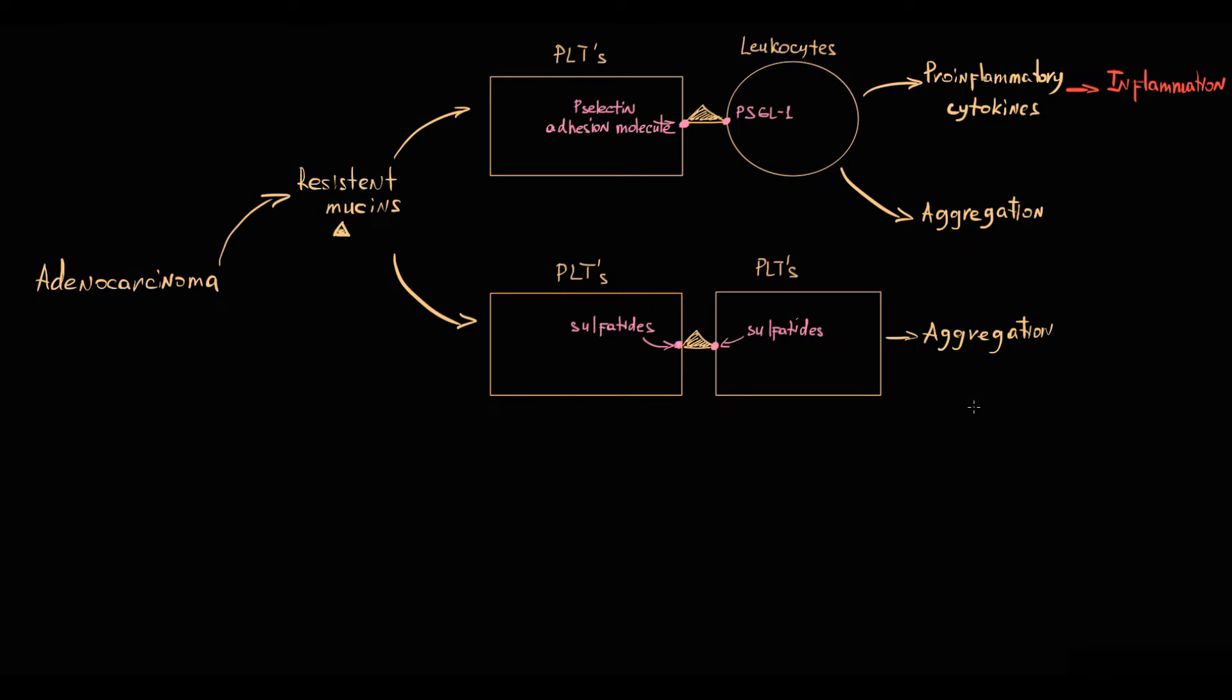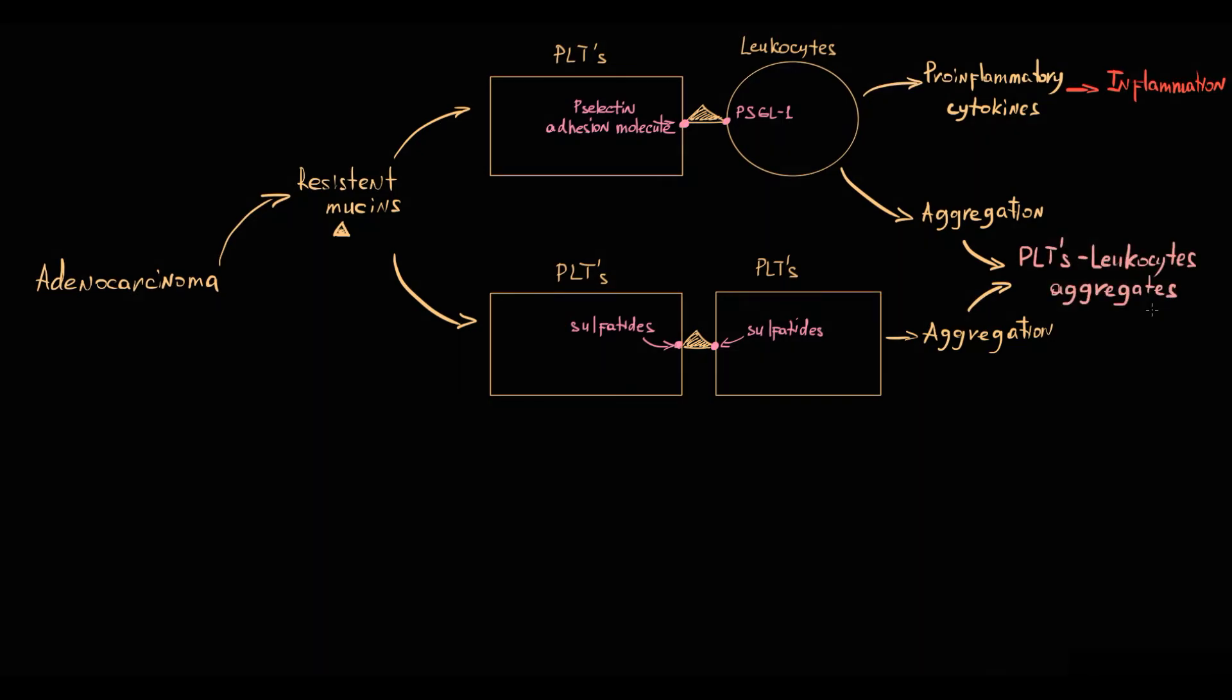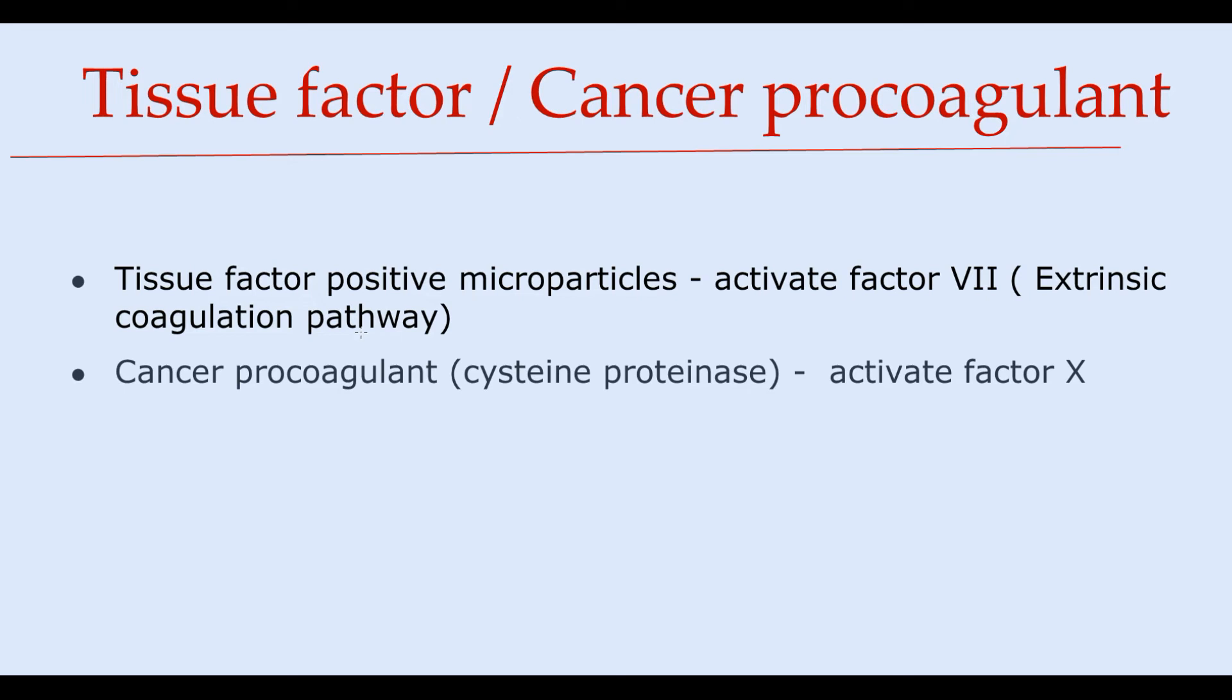So in both cases, P-selectin is working like a glue that provides interactions between platelets and leukocytes, and also it provides platelet aggregation that results in formation of platelet leukocyte aggregates inside blood vessels.